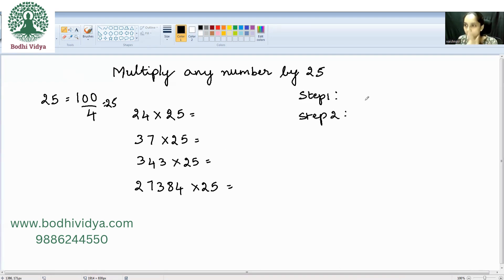There are two steps involved. Step one is append two zeros next to the number which has to be multiplied by 25, and then divide it by 4.